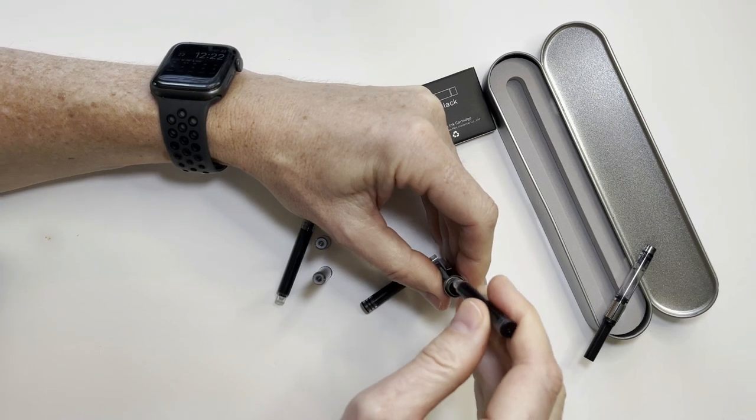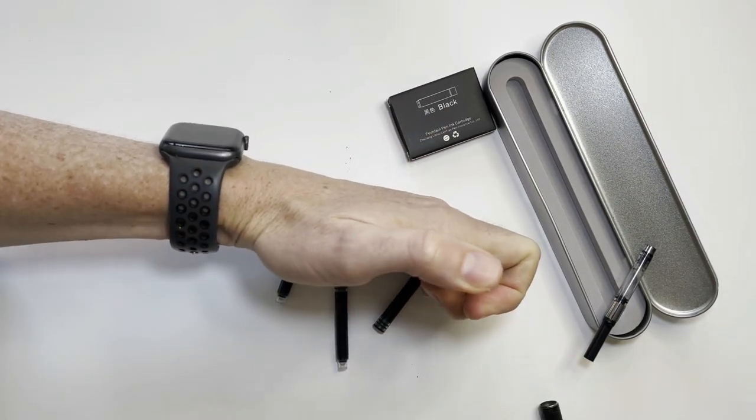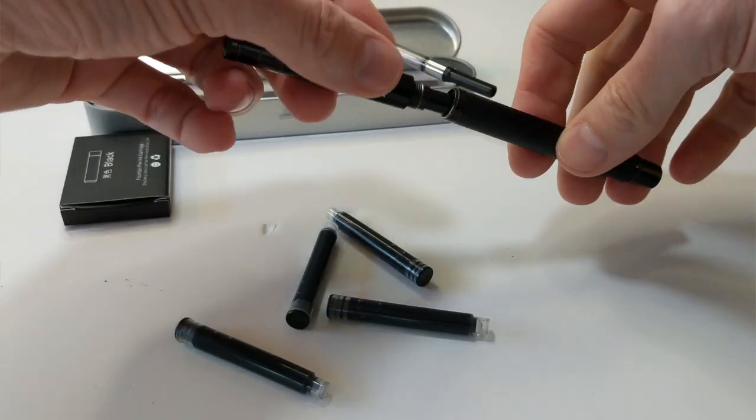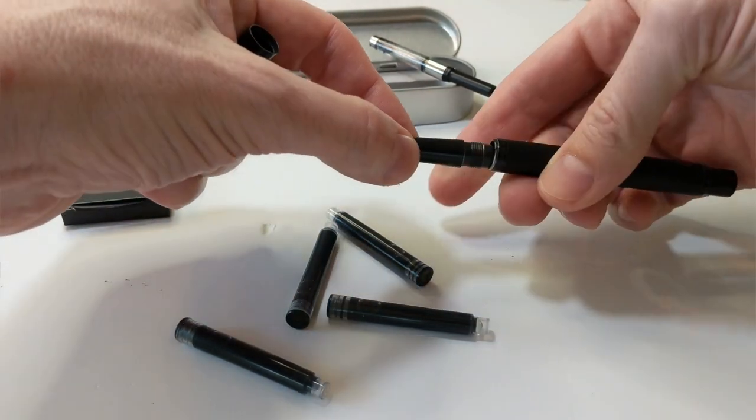So what I did is I turned it vertically and then pressed down with the weight of my hand and thumb and the cartridge snapped into place. Now I can take the pen, put it back together, and I'm ready to write.